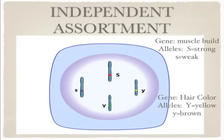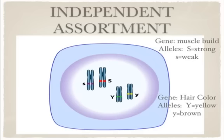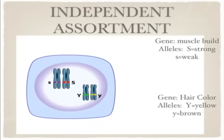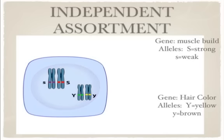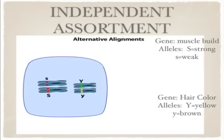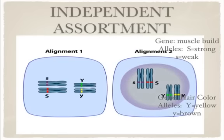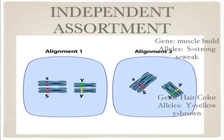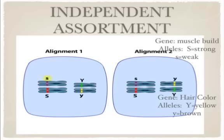We can use a diploid cell with just two pairs of chromosomes to illustrate independent assortment. We track the movement during meiosis of two pairs of homologous chromosomes. Before meiosis begins, the cell replicates each chromosome. Early in meiosis the pairs associate — one chromosome carries a recessive allele like little s, and the other carries a dominant allele like big S. The two pairs line up at the cell's midplane during metaphase I and may adopt one of two alternative alignments, which provide the basis for independent assortment. In alignment one, little s and big Y alleles end up in the same daughter cell; in alignment two, little s and big Y alleles end up in separate daughter cells.